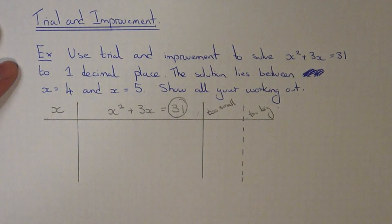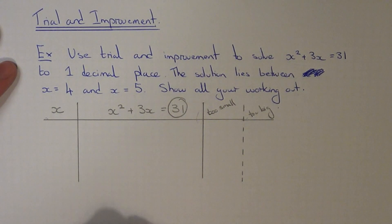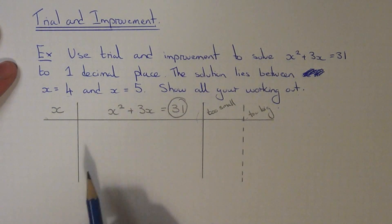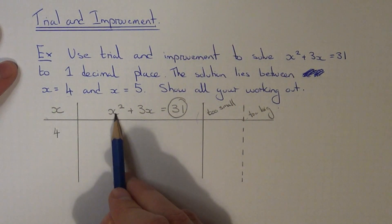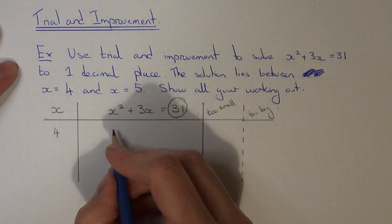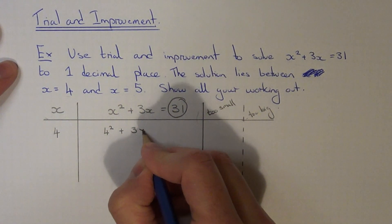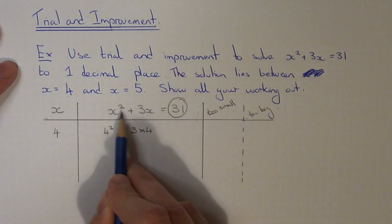So in the question we're told that our solution lies between x equals 4 and x equals 5. So I'm just going to put these two numbers into the equation to start off with just to make sure that the solution lies between x equals 4 and x equals 5. So let's start with 4. So if we're subbing 4 into our equation it will be 4 squared plus 3 times 4.